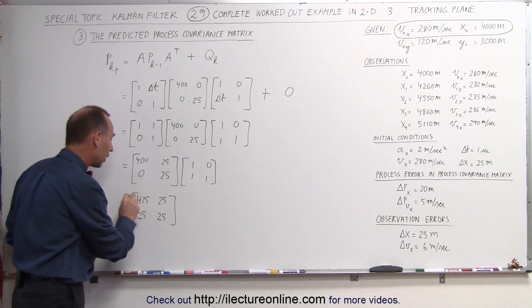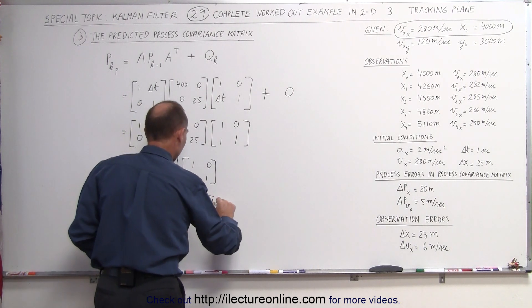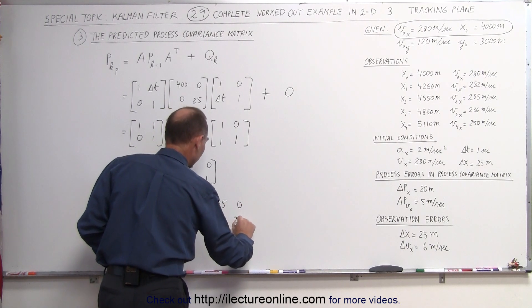We can simply ignore the cross terms and then say that this is approximately equal to, the matrix then becomes 425, 0, 0, and 25.